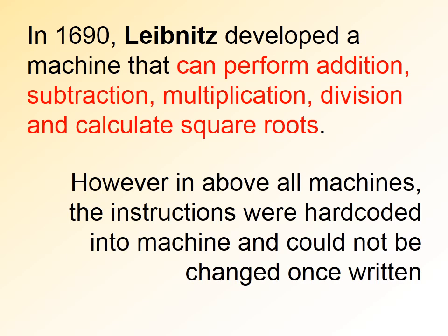In 1690, Leibniz developed a machine that can perform addition, subtraction, multiplication, division, and calculate square roots also. However, in all these machines, the instructions were hard-coded into the machine and could not be changed once written.